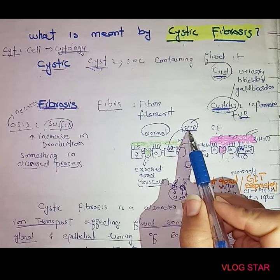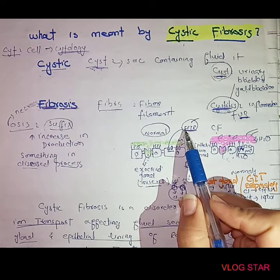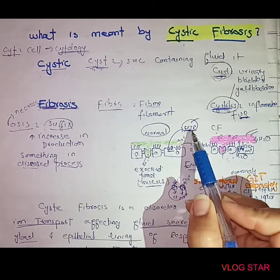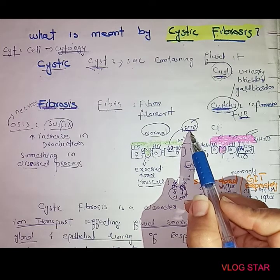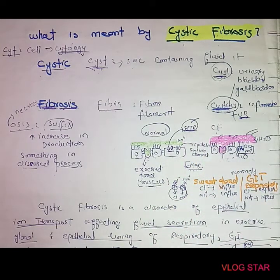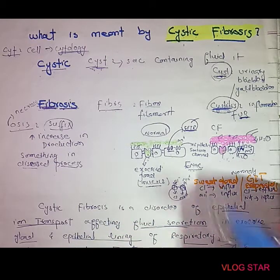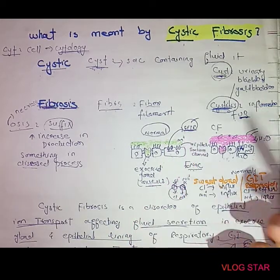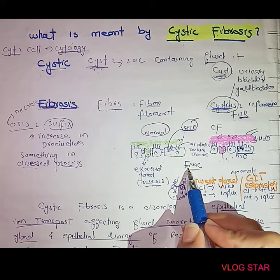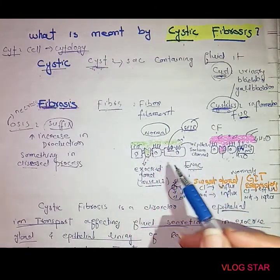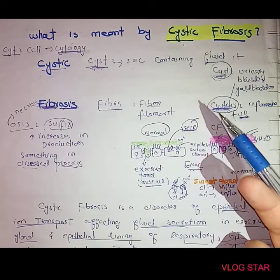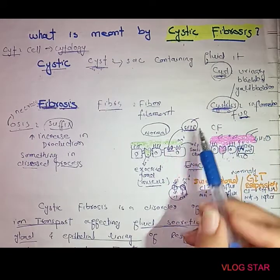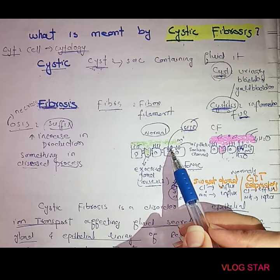CFTR stands for Cystic Fibrosis Transmembrane Conductance Regulator. It functions as a chloride ion channel that is responsible for moving chloride ions. CFTR also influences and regulates sodium ion movement. In cystic fibrosis, CFTR will not work properly or will be absent entirely.